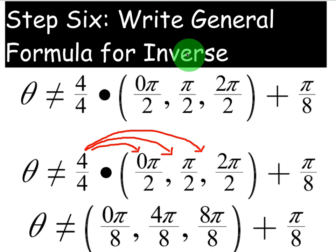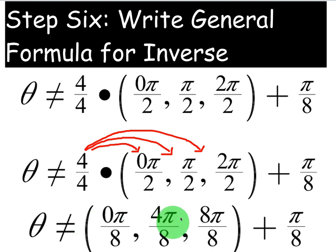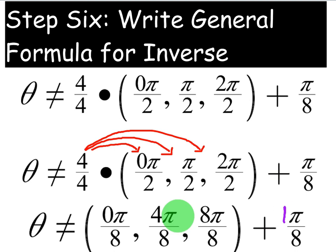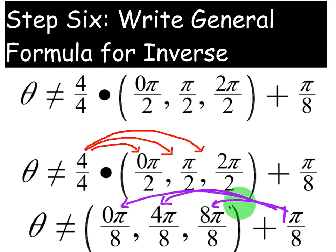Now that θ is isolated, we simplify the right side to combine terms. We need a common denominator — the 2s need to become 8s, so we multiply those fractions by 4/4. That gives us: 0·π/8, 4π/8, and 8π/8. Then we add the π/8 — which is 1·π/8 — to each term, adding 1 to each coefficient: 0+1=1, 4+1=5, 8+1=9.